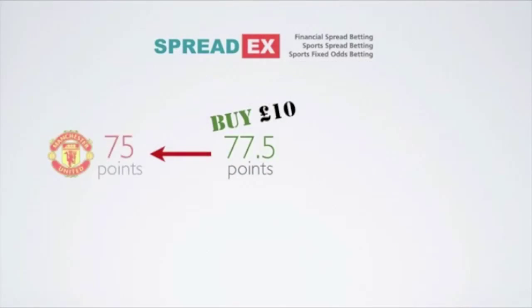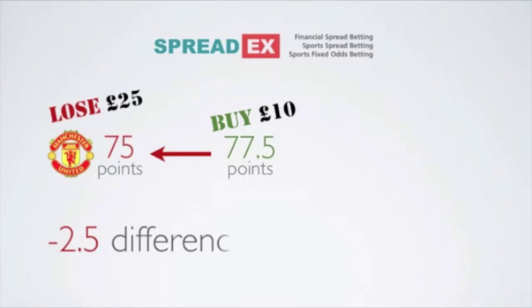However, if Man United had ended on 75 points, you would have lost £25 — the difference between 75 and your buy price of 77.5, multiplied by your stake.